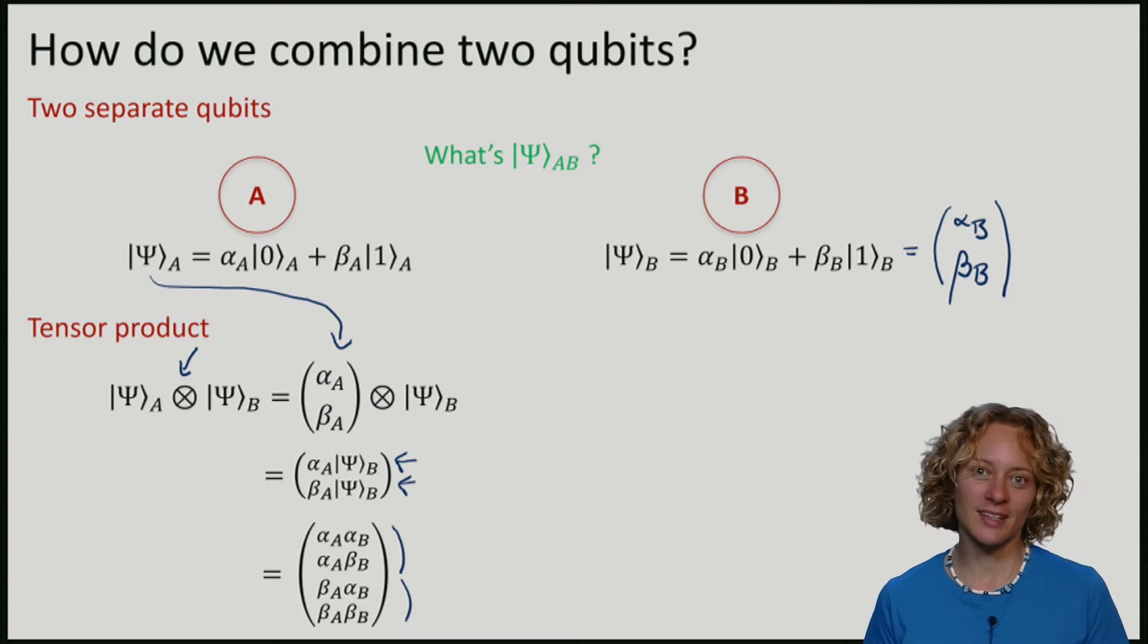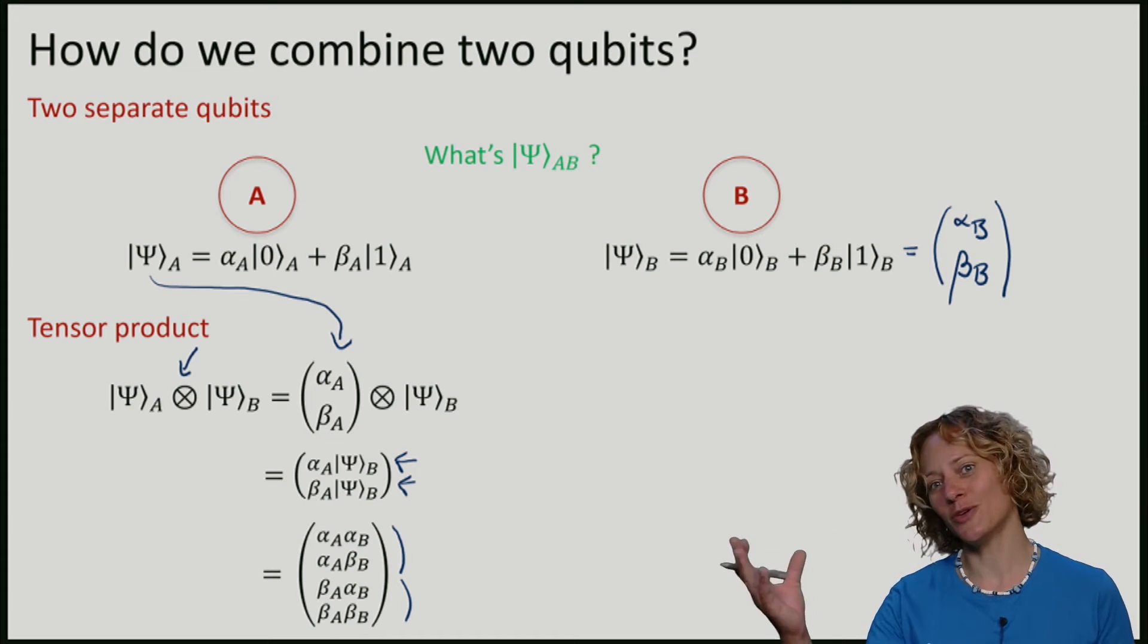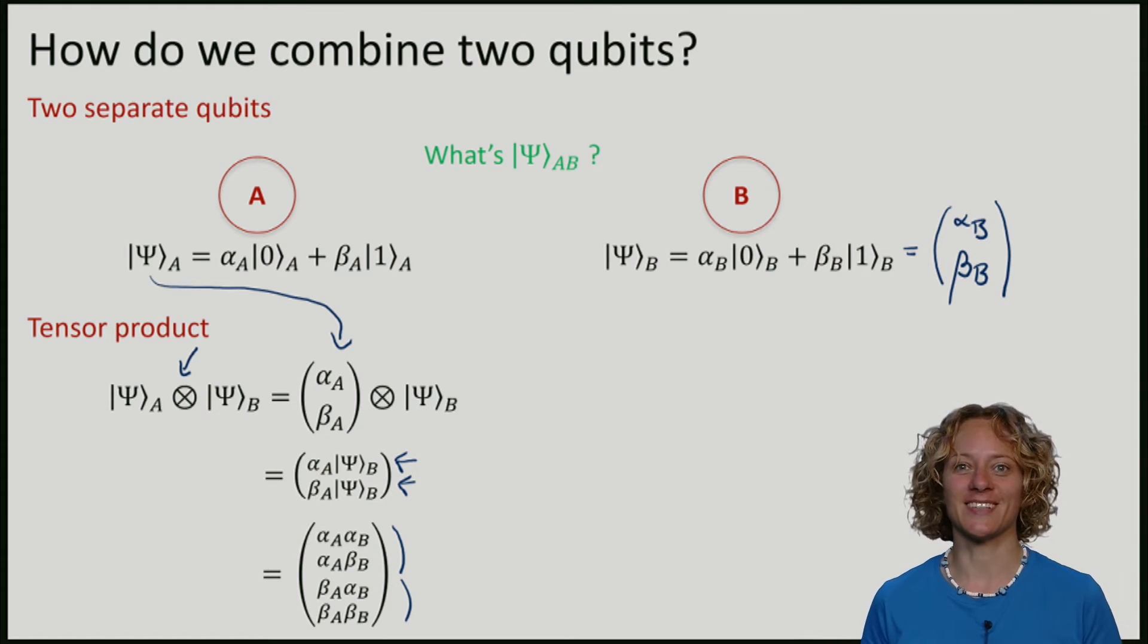The same procedure, the tensor product, can also be applied to combine a one qubit state with a two qubit state, and you can find this in the lecture notes.